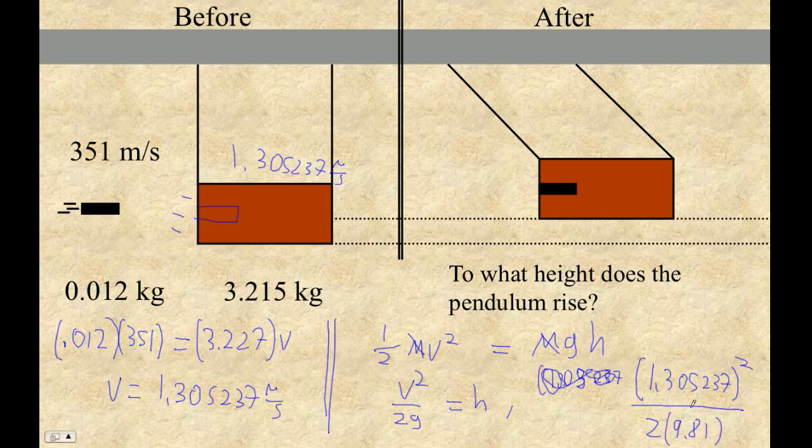So square that number, divided by 2, divided by 9.81, and I get that the height is 0.08683 meters, or about 8.7 centimeters.